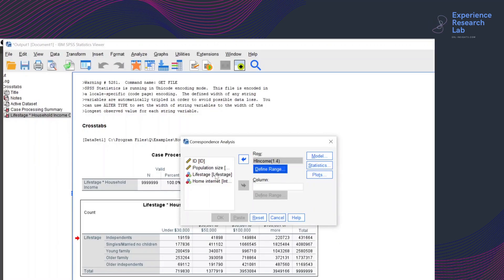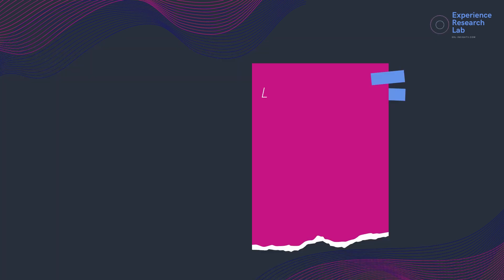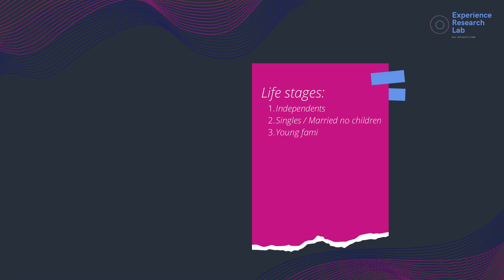Now for the column, I'll select the life stages and define the range from one to five, because it has five values for different life stages. One for the independents, two for the singles or married with no children, three for the young families, four for the old families, and five for the independents.